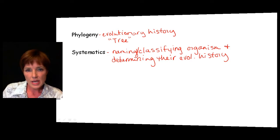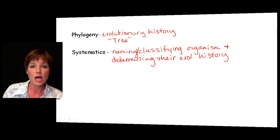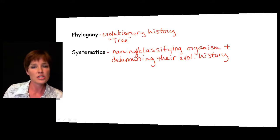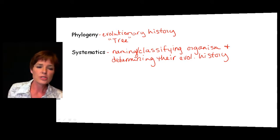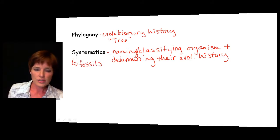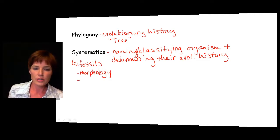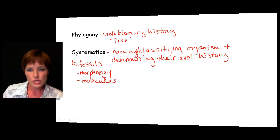When we talk about systematics, there are a lot of different tools that come into play when we try to come up with the names or classification of an organism and then also how to assemble them on an evolutionary or phylogenetic tree. Some of the tools that will be used will be fossils. We'll also take a look at morphology, and then last but certainly not least, there will be various molecules involved — usually DNA, but we could also be talking about something like a protein.